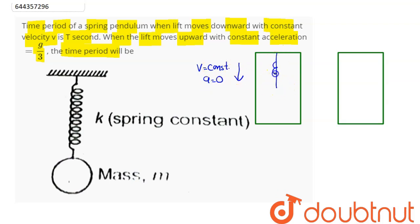For this spring pendulum with mass m attached to the spring, we have the time period given by the formula as T is equal to 2π square root of m divided by k. Now this m is the mass and k is the spring constant.